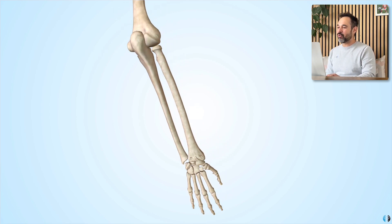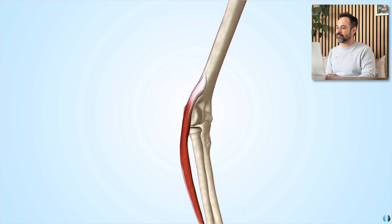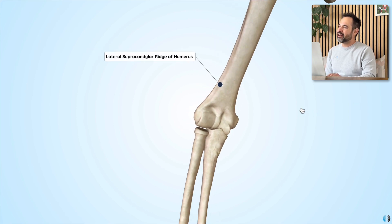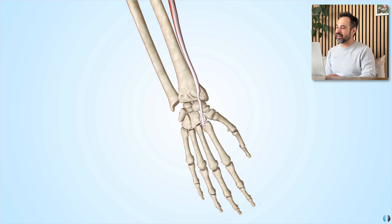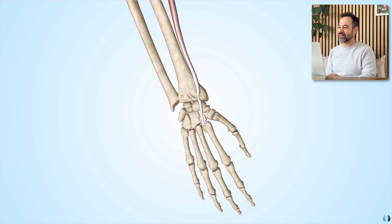Let's start off with one of the biggest of the group, which is the extensor carpi radialis longus muscle. This muscle originates from the anterolateral supracondylar ridge of the humerus — a ridge just proximal to the lateral epicondyle. It's the more anterior surface of this ridge that the muscle originates from. The muscle then runs down the radius posteriorly to insert into the base of the second metacarpal.